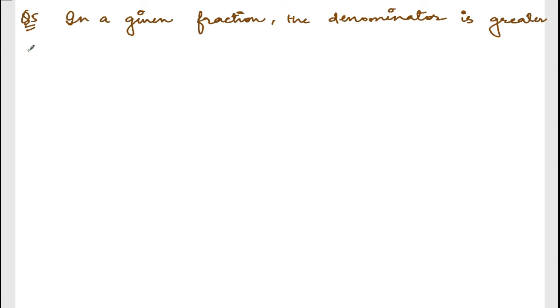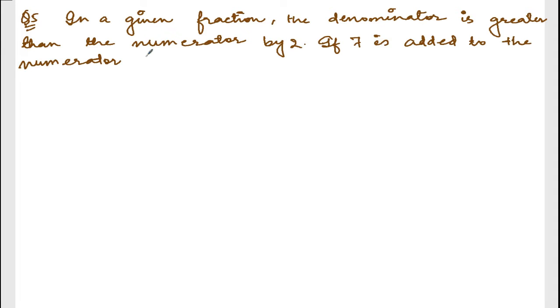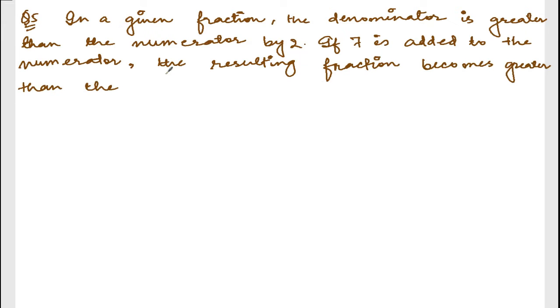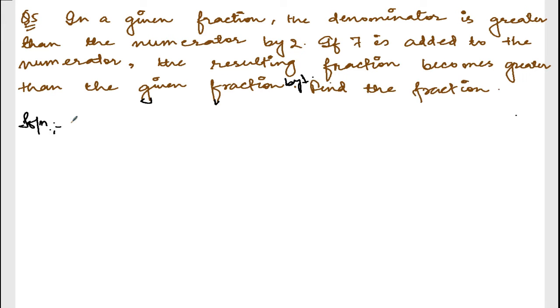Now we are doing exercise 4.3, question number 5. Let me write down the question. So here is our question. In a given fraction, the denominator is greater than the numerator by 2. If 7 is added to the numerator, the resulting fraction becomes greater than the given fraction by 1. Find the fraction.